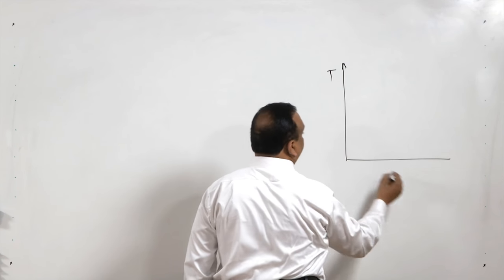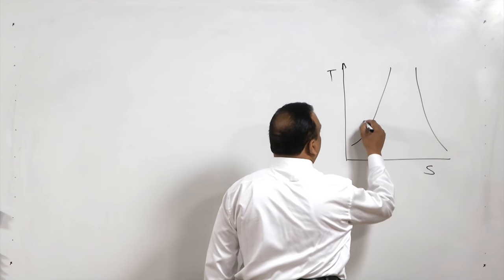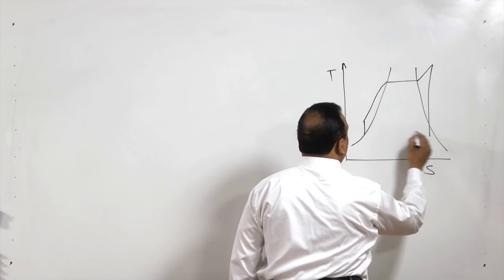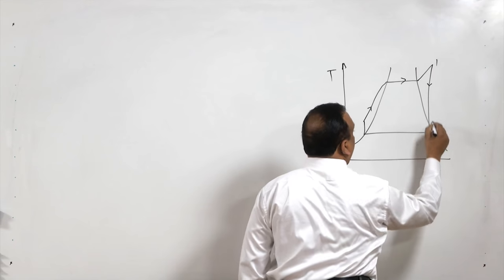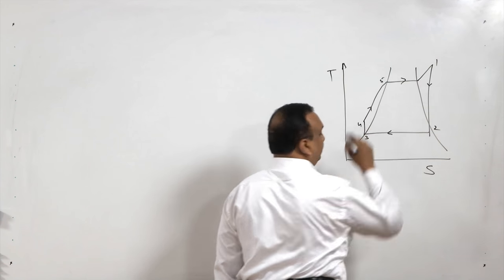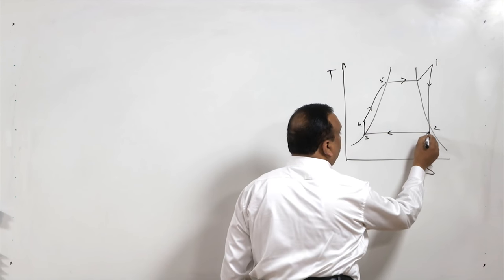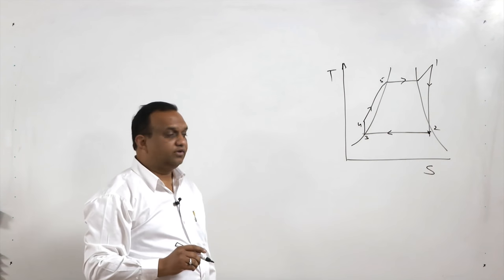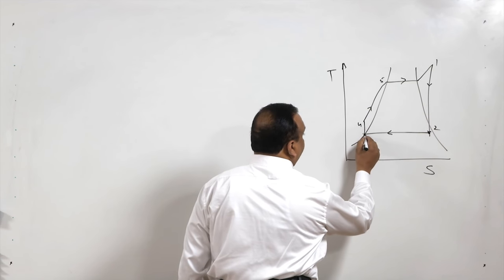If I draw the steam power generation on the Rankine cycle — state 1, state 2, expansion from 2 to 3, and 3 to 4 and 4 to 5 — then from state 1 to 2, the steam enters the condenser at state 2 and the condensate is removed at state 3.